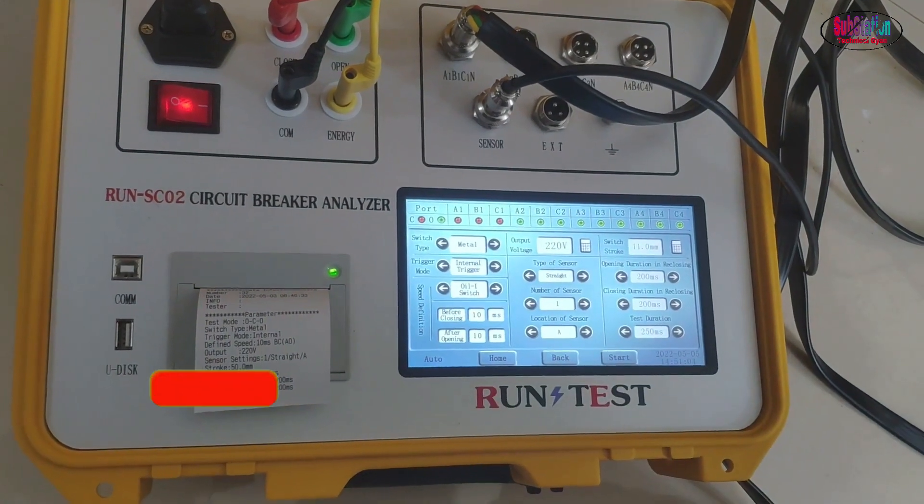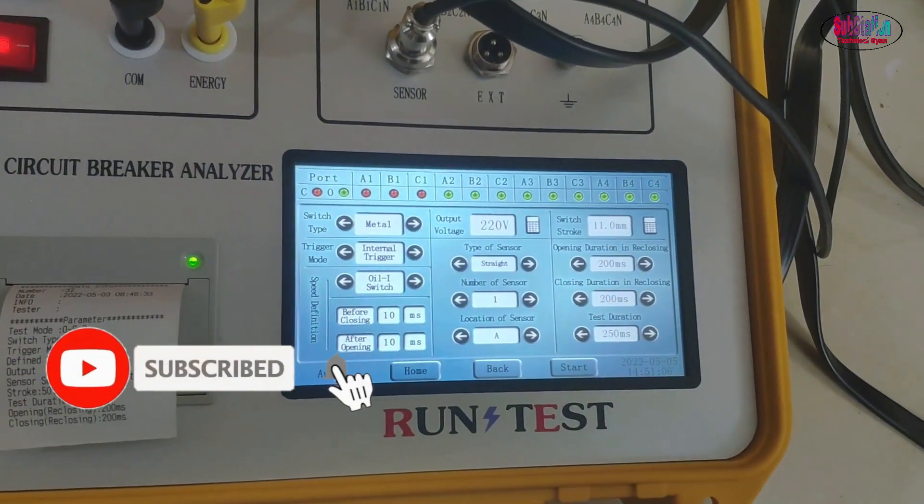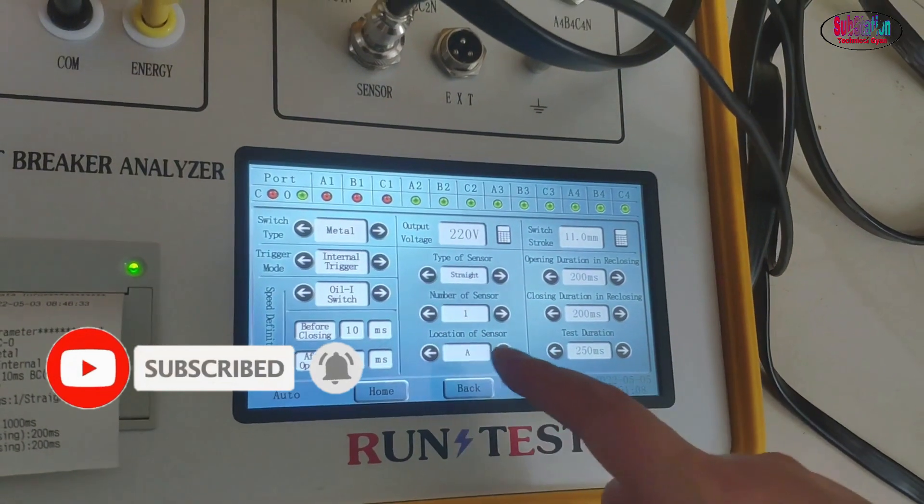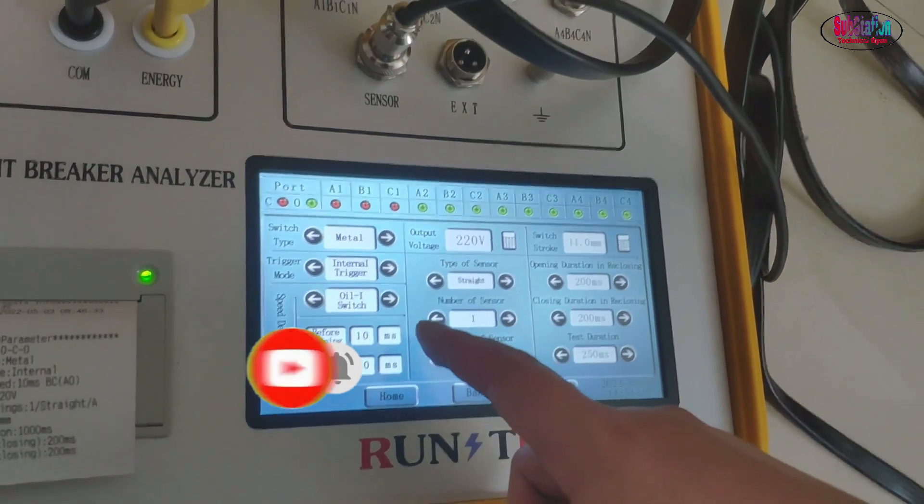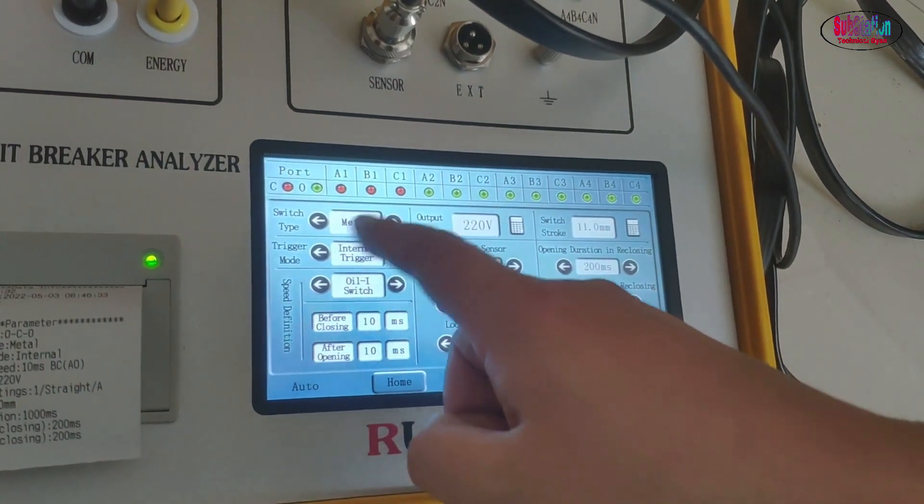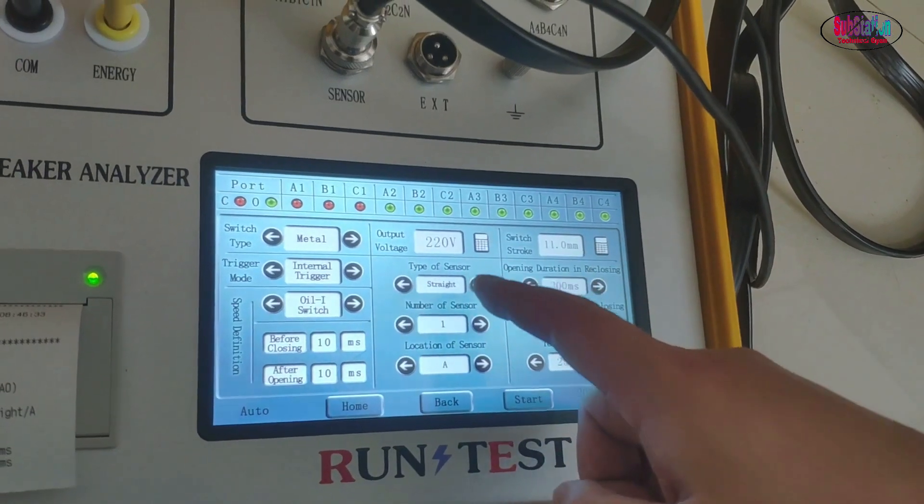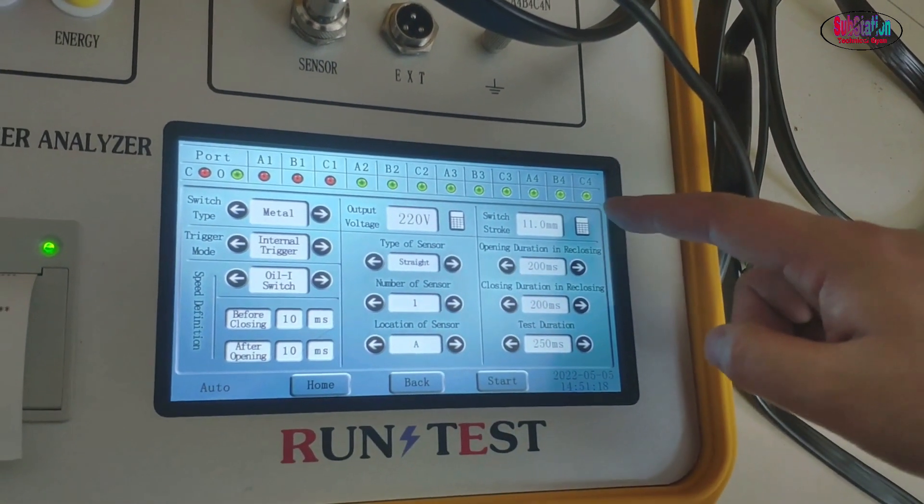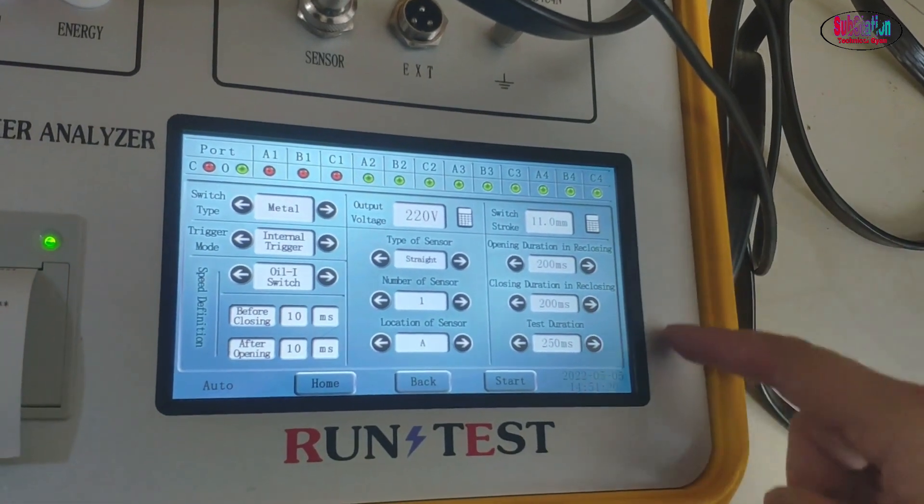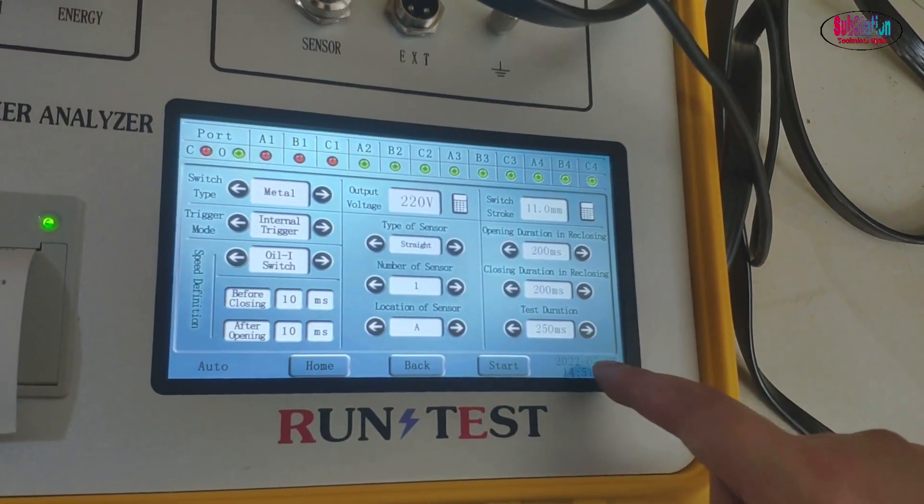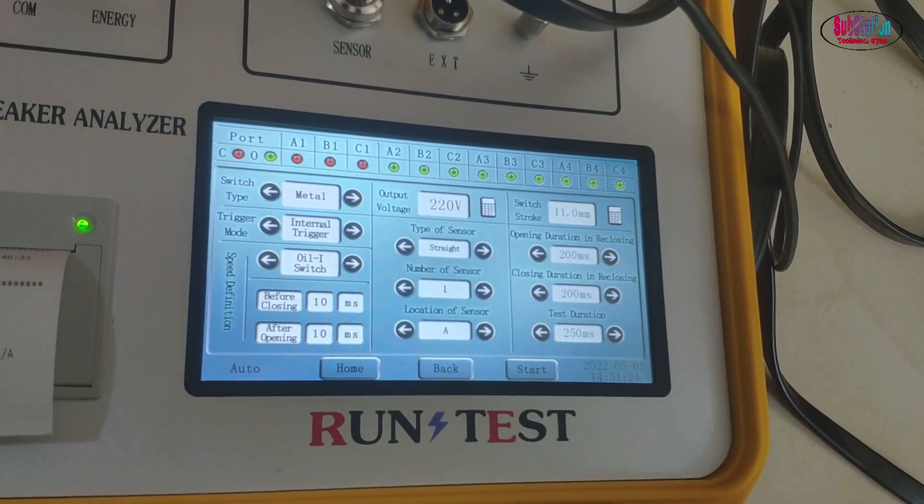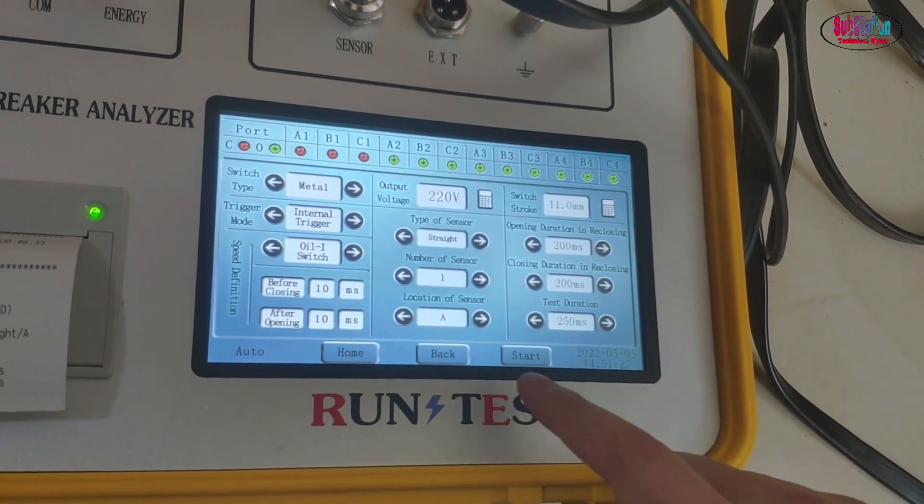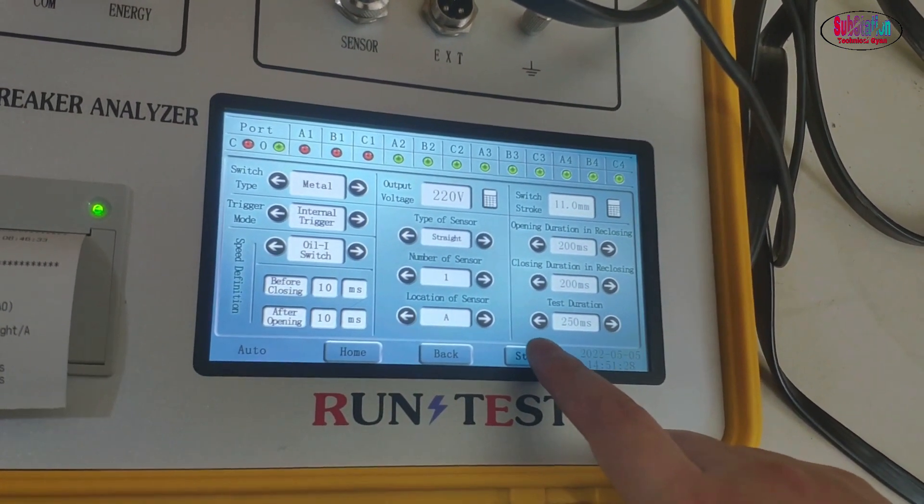We just set in the parameters. This is an oil circuit breaker and we use internal trigger. The output voltage is 220 and the stroke is 11 millimeters. We set the test duration around 250. We just press start.